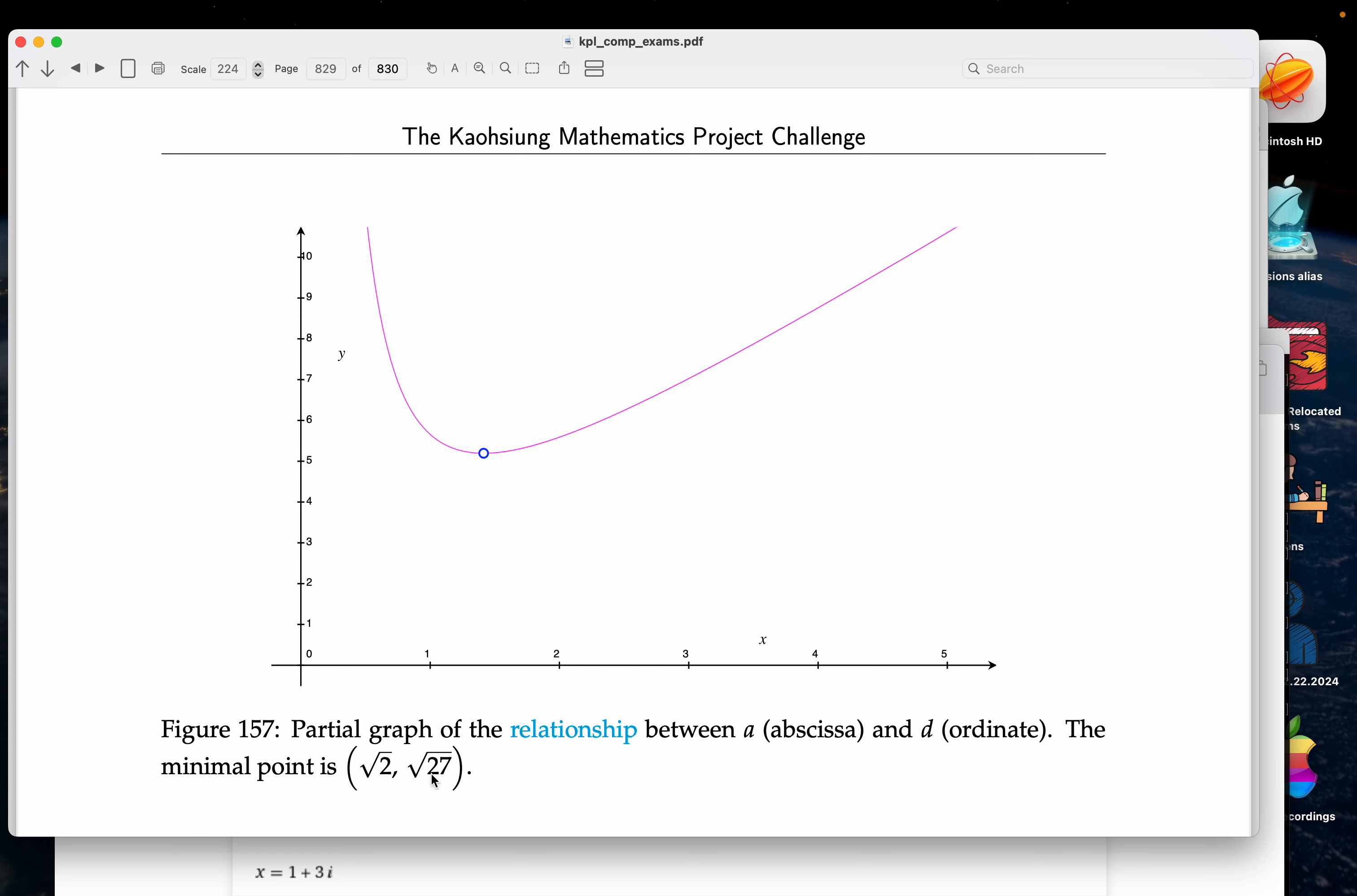The least the distance could be is root 27, and then as a approaches zero, the distance starts to increase. I have another graph and I'll go to that next.